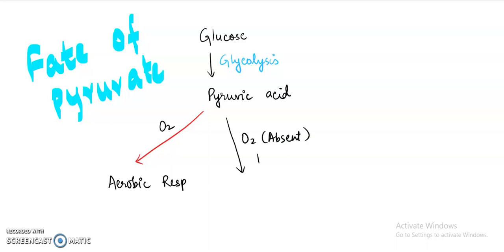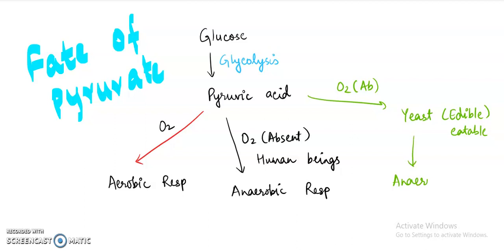Like if oxygen is there, then aerobic respiration will occur. If oxygen is absent, then in the case of human beings, anaerobic respiration will occur. Third case: if oxygen is absent again, but we are talking about a fungus called yeast, which is the example of edible fungus—edible means eatable—so if oxygen is not there in the yeast, then also anaerobic respiration has to occur.